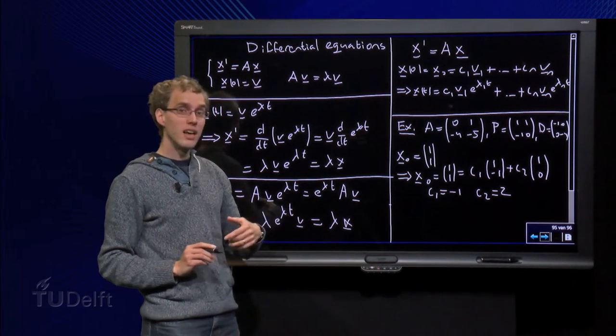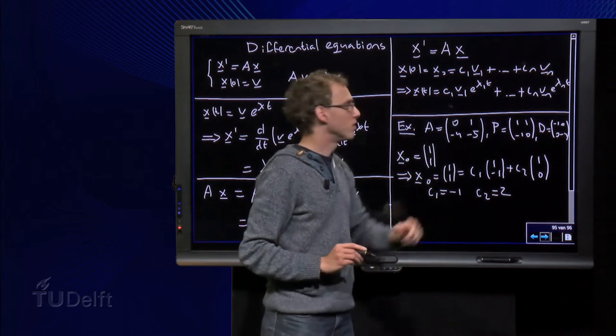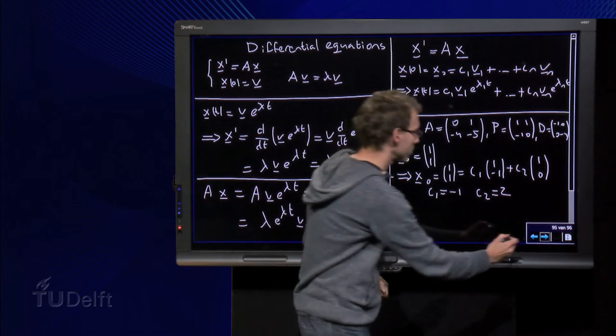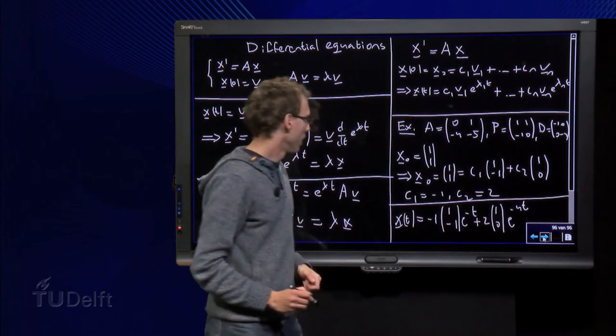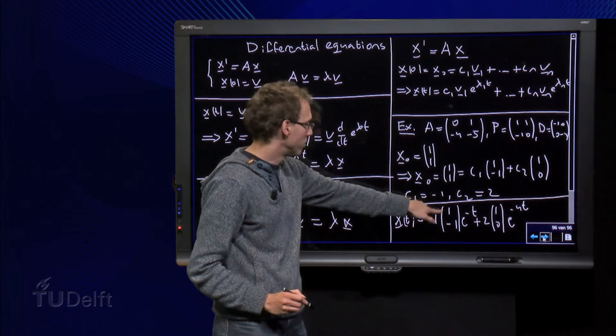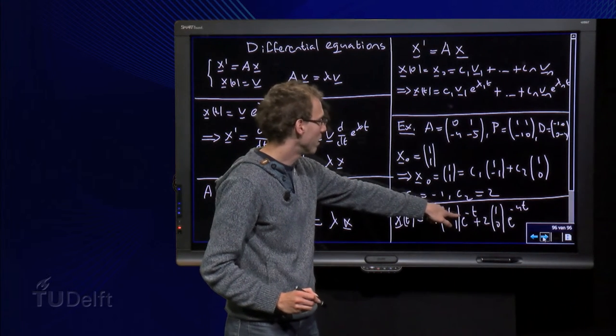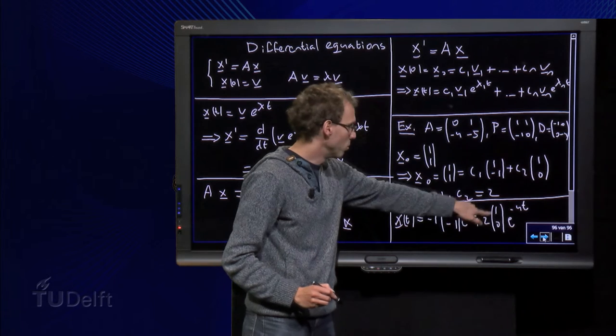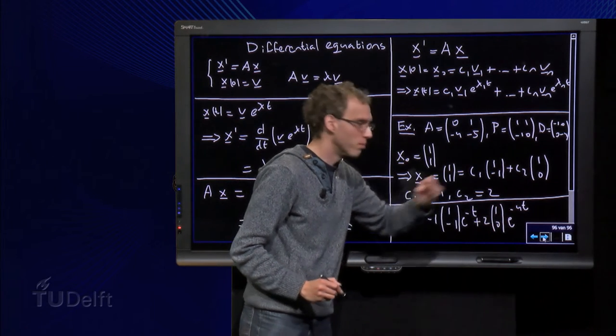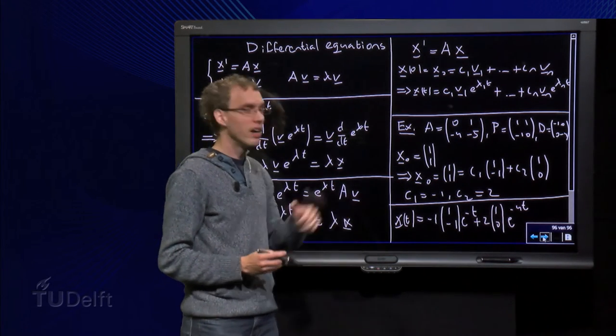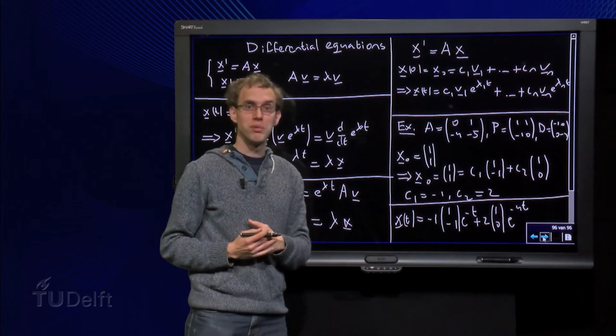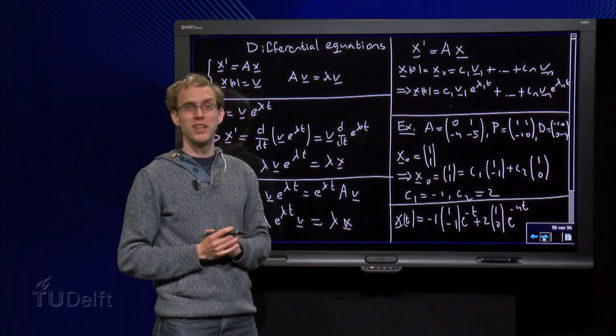And then you can write down the solution like this, with only two terms now. x of t equals c1 times v1 times e to the power minus t, lambda 1, plus c2, 2 times v2 times e to the power lambda 2t. So here you have the solution explicitly. Of course it is nice to have an explicit solution.